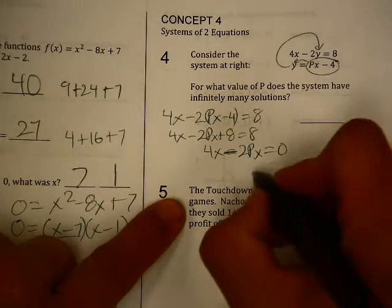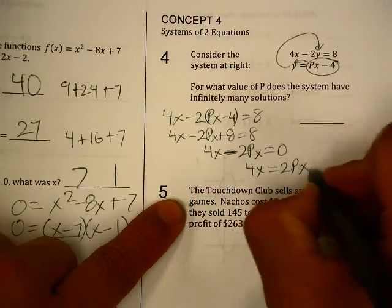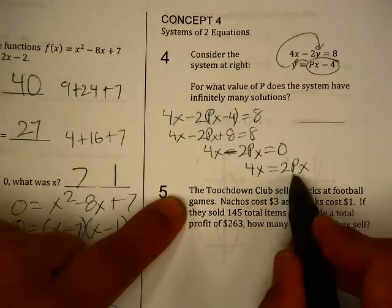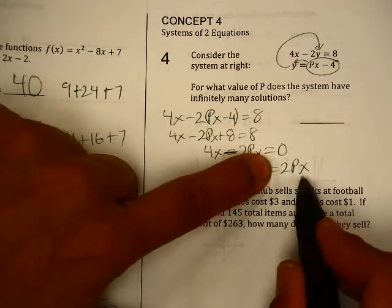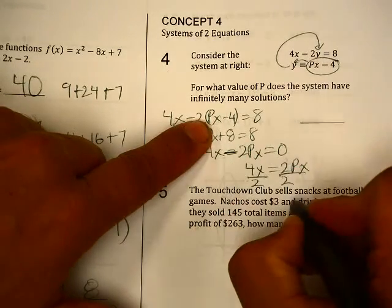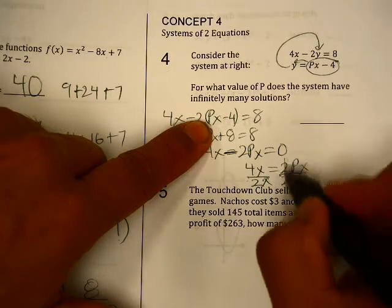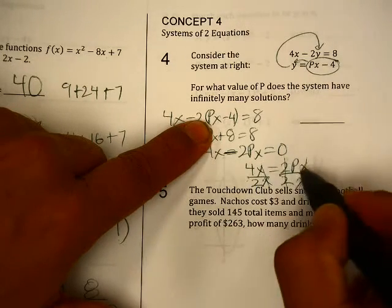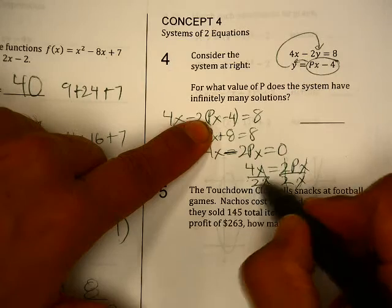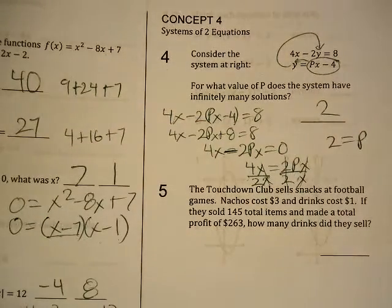Add 2px to both sides. 4x equals 2px. Then to get the answer for p, get rid of everything else. I need to divide by 2 and divide by x. So everything cancels out here. The only thing that's left is 4 divided by 2 is 2. So 2 equals p.